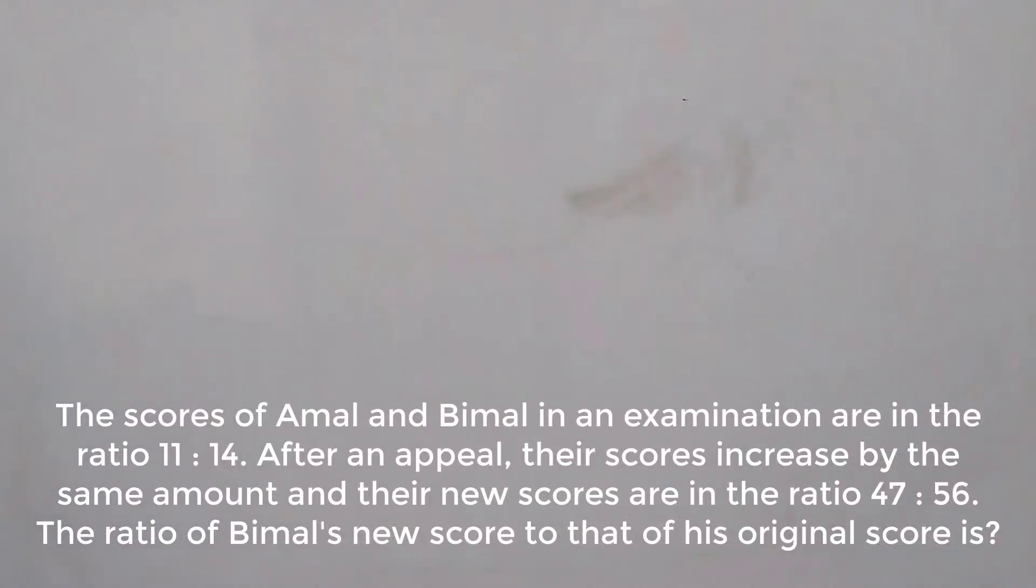This is a ratio and proportion question from CAT 18 slot 2 paper. The scores of Amal and Bimal in an examination are in ratio 11 is to 14. So we have two guys Amal and Bimal and their scores are in the ratio of 11 is to 14. So let's say this is 11x and score of Bimal is 14x.